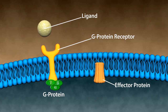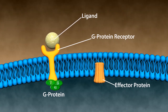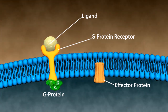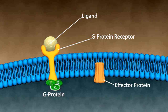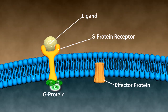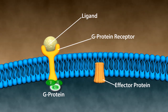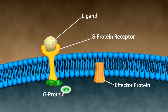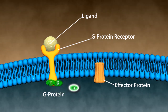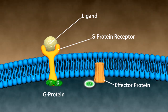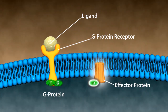With the G-protein-coupled receptor, first the ligand binds to the receptor, which causes structural changes in the receptor and in turn changes the shape of the G-protein, which reduces GTP to GDP. This leads to the separation of the alpha subunit from beta and gamma units, which in turn activates other enzymes and effector proteins.